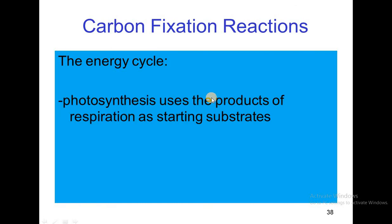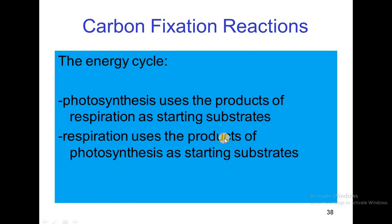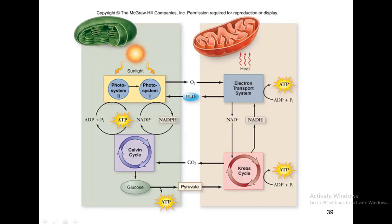The energy cycle: photosynthesis uses the products of respiration as a starting substrate, and respiration uses the products of photosynthesis as a starting substrate. As shown in this diagram, O2 and pyruvate are the products of photosynthesis and these products are used in respiration as a starting substrate.